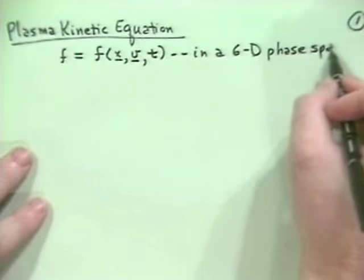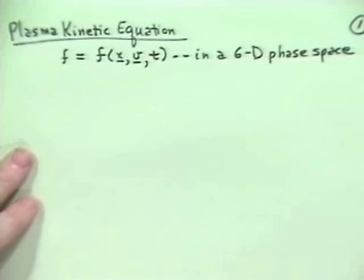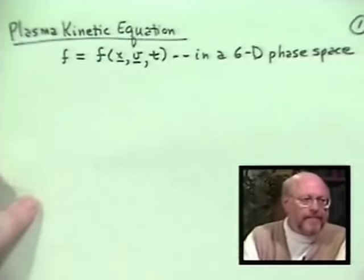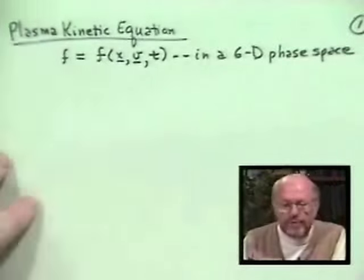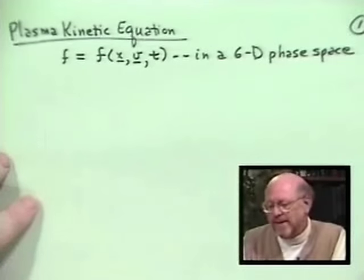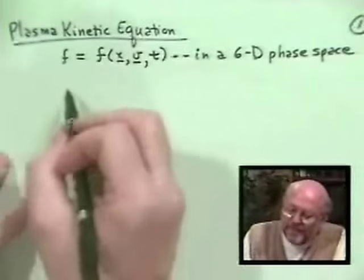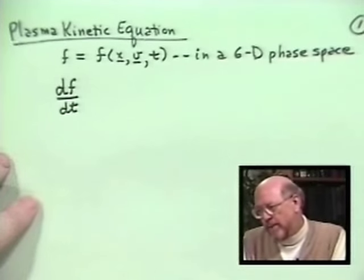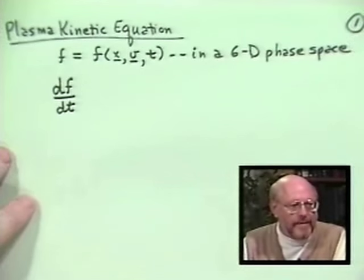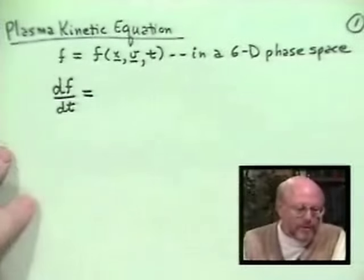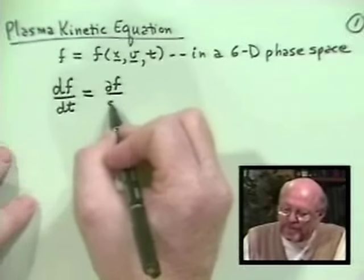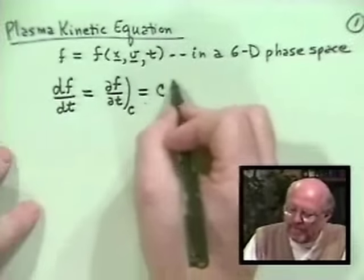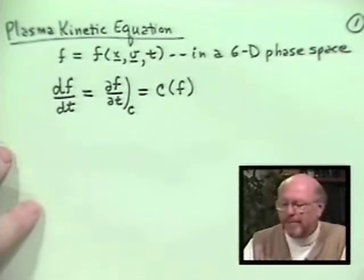If we calculate this distribution function f, what equation governs it? Actually, it's a very simple equation written down on inspection, though you go through course 725 to really derive it. The basic idea is that the total time derivative df/dt would be zero in a plasma if not for collisions. Since we have some collisions, people write this as the partial of f with respect to t due to collisions, or as a collision operator C(f).